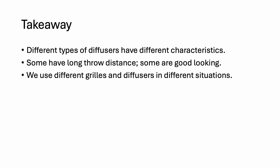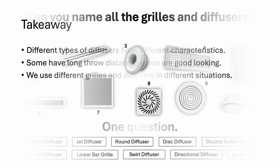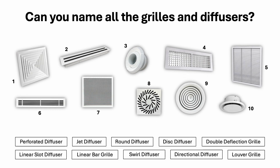Therefore, it is important that we understand the characteristics of different diffusers, so that when the time comes, we know which type is best for the application. So now you know why we need different types of grills and diffusers. Can you name all the grills and diffusers shown earlier in the video? Share your answer in the comment section. That's all for this video — thanks for watching, and I'll see you in the next one.